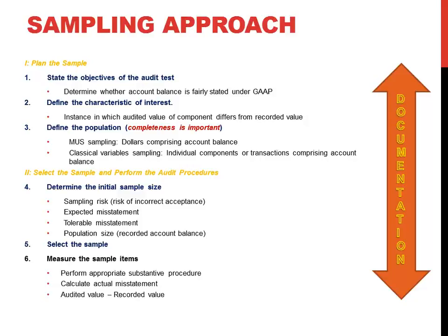What's our characteristic of interest? What are we auditing? What is the recorded value? The instance in which the audited value differs from the recorded value — that's the misstatement.